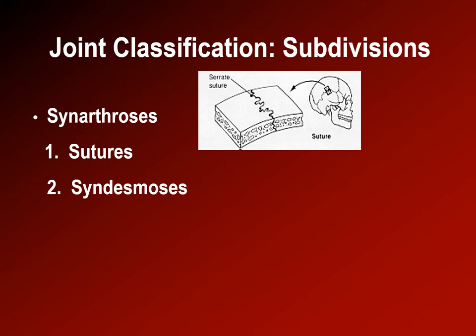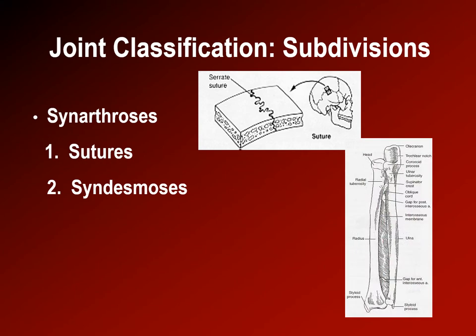Syndesmoses are fibrous joints. An example are the interosseous membranes between the bones of the lower leg — the fibula and tibia — or between the bones of the forearm, the radius and the ulna. They are very strong, held together by a very thick, wide, ligamentous type of structure.